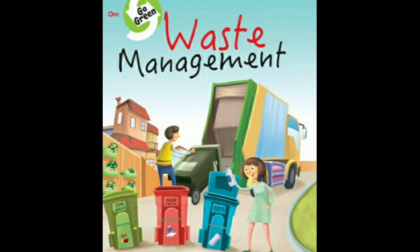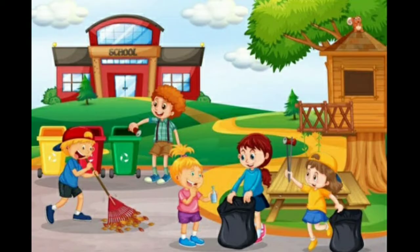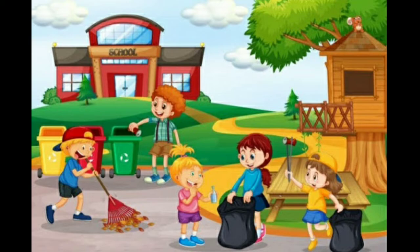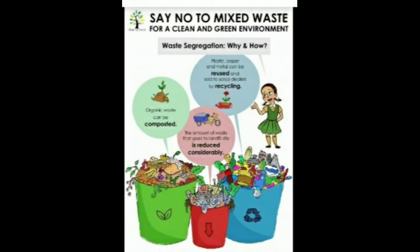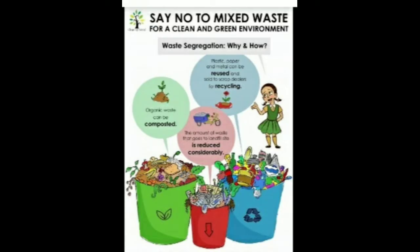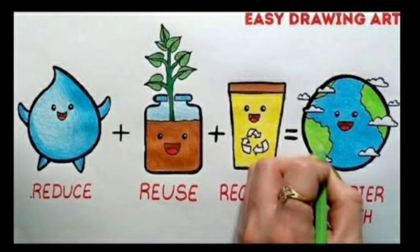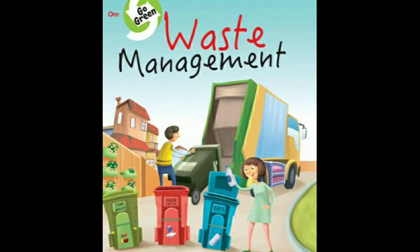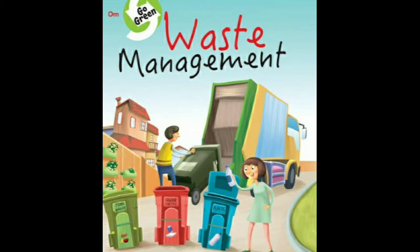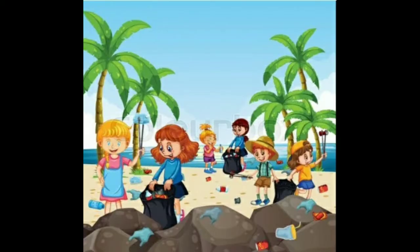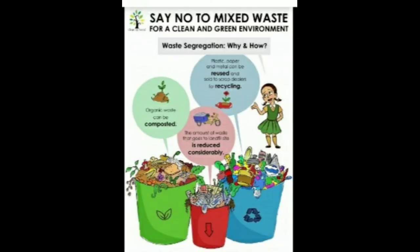What are the different forms of waste and what methods can we use to dispose of them? There are three forms of waste: solid waste, liquid waste and gaseous waste. Solid waste can be segregated, dumped, composted, or incinerated. Liquid waste disposal involves effluent treatment before discharge. Gaseous waste disposal involves the use of scrubbers and electrostatic precipitators.